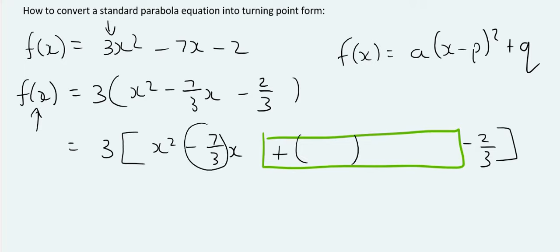Then, we're going to take whatever this number is over 2. So, it's going to look like this. Squared minus, and then minus 7 over 3 over 2 squared. Okay.